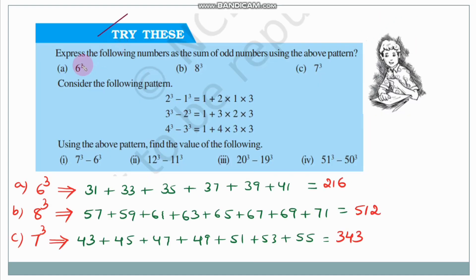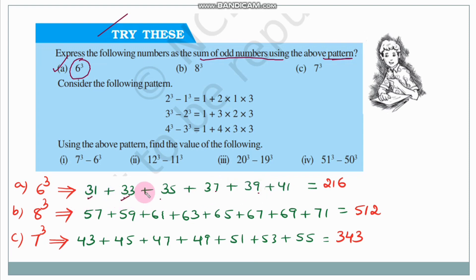Try this: express the following numbers as the sum of odd numbers using the above pattern. For 6³: we need 6 consecutive odd numbers. 6³ = 31+33+35+37+39+41. Counting: 1, 2, 3, 4, 5, 6 — that's 6 consecutive odd numbers, and their sum is 216 = 6³.